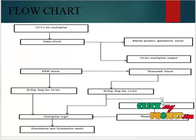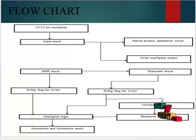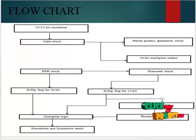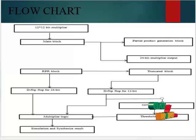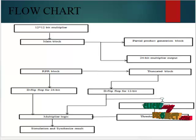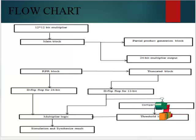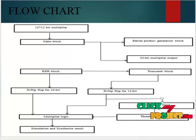Now we discuss the partial product generation. The Booth multiplier has been widely used for high-performance signed multiplications by encoding, thereby reducing the number of partial products. A multiplier using the Radix 4 algorithm is very efficient due to the easy partial product generation, whereas the Radix 8 Booth multiplier is slow due to the complexity of generation.